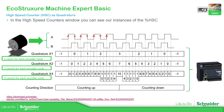With quadrature per four, for each complete cycle of both A and B it counts four. So for each cycle it increments by four. The direction still depends on which pulse comes first — A or B.